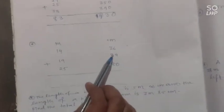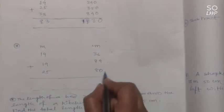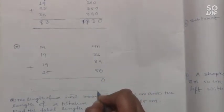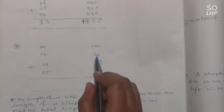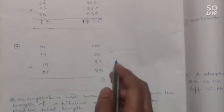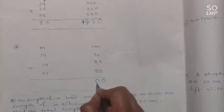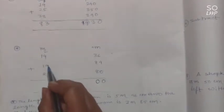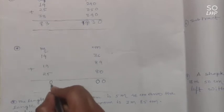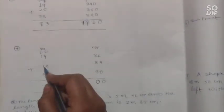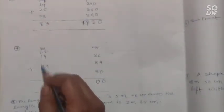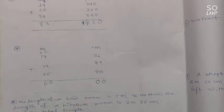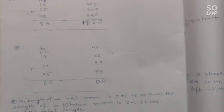Next meter and centimeter addition example. Starting from the right: 6 plus 4 is 10, plus 0 is 10, carry 1. 3 plus 8 is 11, plus 8 is 19, plus 1 is 20, carry 2. 4 plus 5 is 9, plus 9 is 18, plus 2 is 20, carry 2. 1 plus 1 is 2, plus 2 is 4, plus 2 is 6. Answer: 60 meter 0 centimeter.